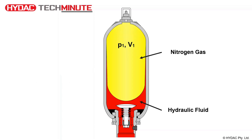Once system pressure increases above the gas pre-charge pressure, the poppet valve opens, the hydraulic fluid enters the accumulator, and the bladder is compressed. The hydraulic fluid will continue compressing the bladder if the system hydraulic pressure increases.